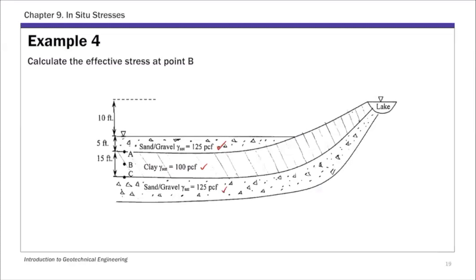For this example, we're going to calculate the effective stress at point B. Point B is at the middle of the clay layer, at 7.5 feet — right at the middle of the clay layer.